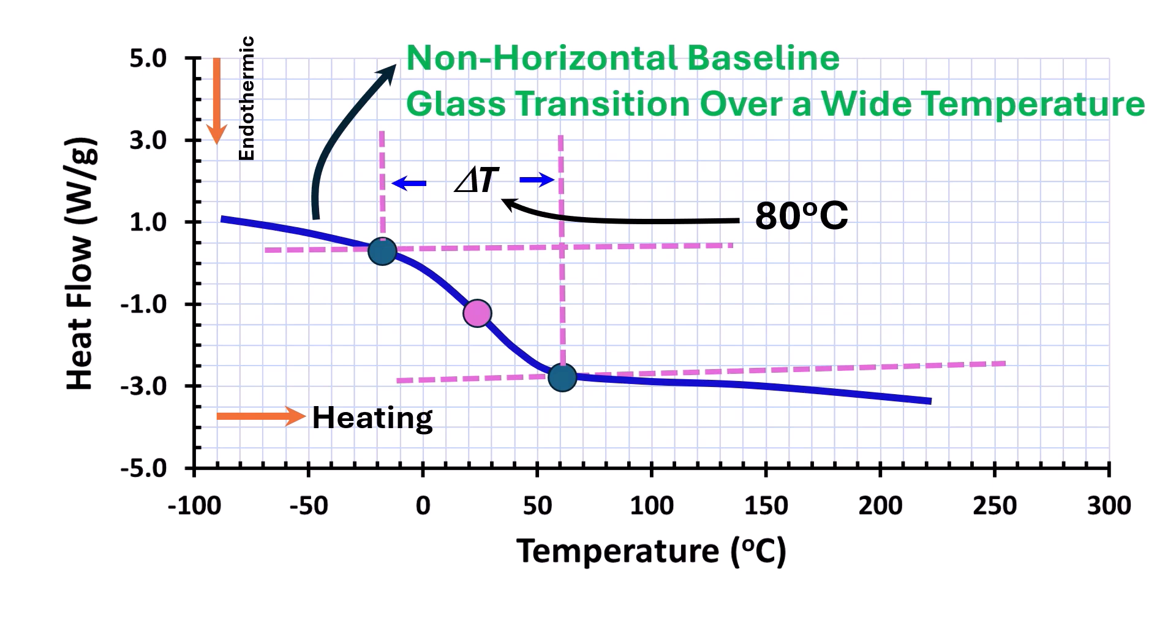The decrease of baseline with a slope indicates that specific heat decreases due to temperature as well as other structural damage or network formations. The glass transition observed over a wide temperature indicates the slow time-dependent relaxation of the sample. We could also determine del Cp that is specific heat change at glass transition.